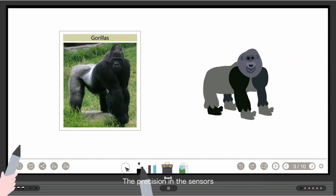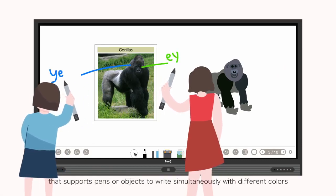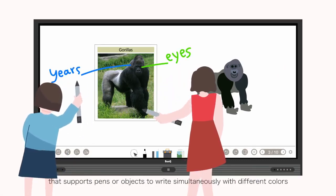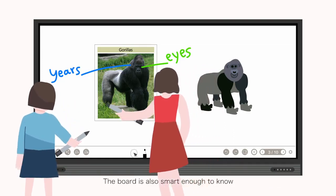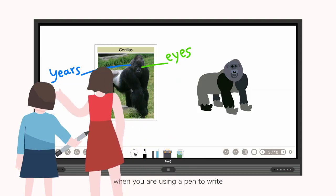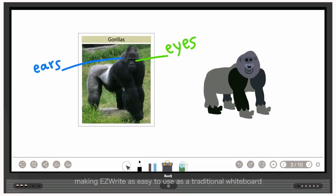The positioning of the sensors allows EasyWrite to enable dual pen mode that supports pens or objects to write simultaneously with different colors. The board is also smart enough to know when you are using a pen to write or your palm to erase, making EasyWrite as easy to use as a traditional whiteboard.